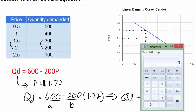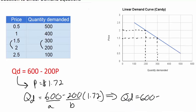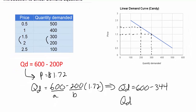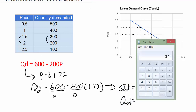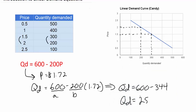So quantity demanded equals six hundred minus two hundred times one seventy-two. Two hundred times one dollar and seventy-two cents gives me three hundred and forty-four. So QD equals six hundred minus three hundred and forty-four, which gives me two hundred and fifty-six. I have just determined that at a price of one dollar and seventy-two cents, the quantity demanded will equal two hundred and fifty-six units of candy.